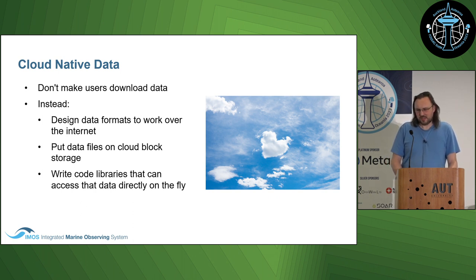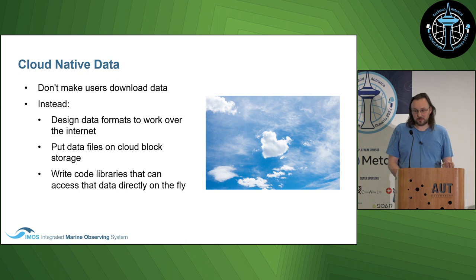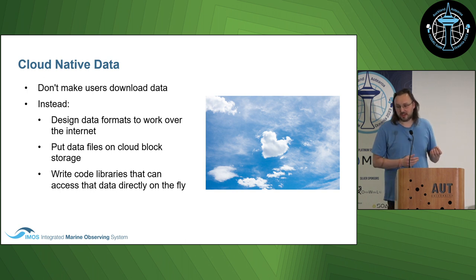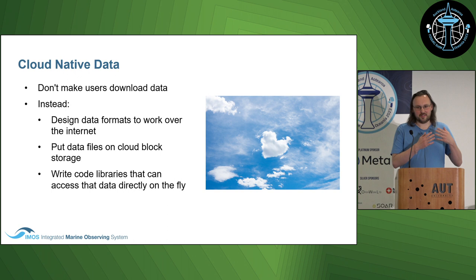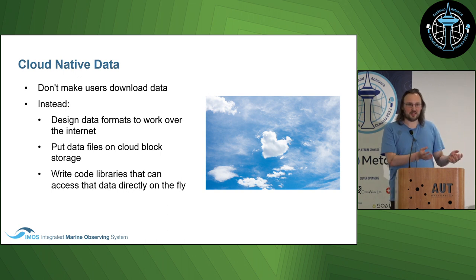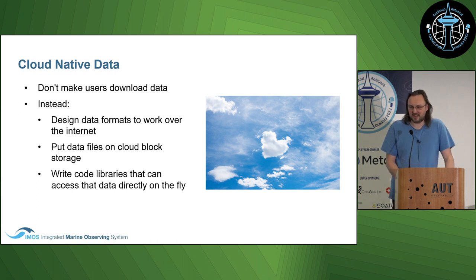The cloud-native paradigm means you don't make users download the data. Instead, you design cloud-native or cloud-optimized data formats to work over the internet. You put data files on cloud block storage like Amazon S3, then write code libraries that can access that data directly on the fly. Scientists can load up Python or R, specify their parameters and which part of the data they want, and only the specific subset comes down over the network — for instance, just one particular year without downloading everything.